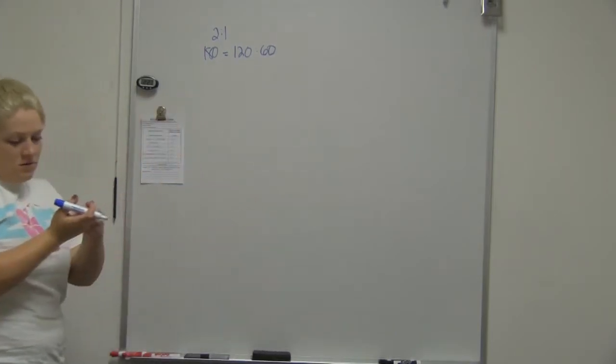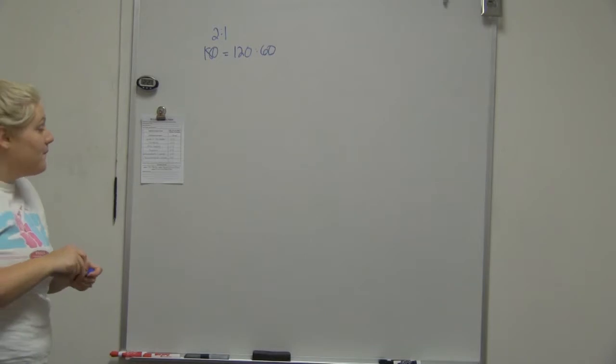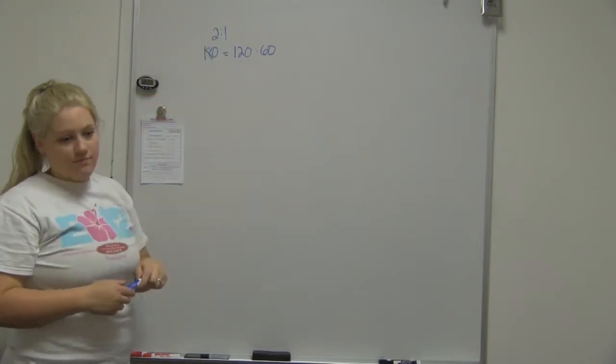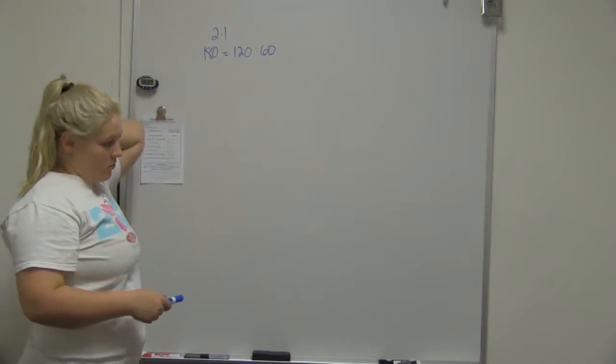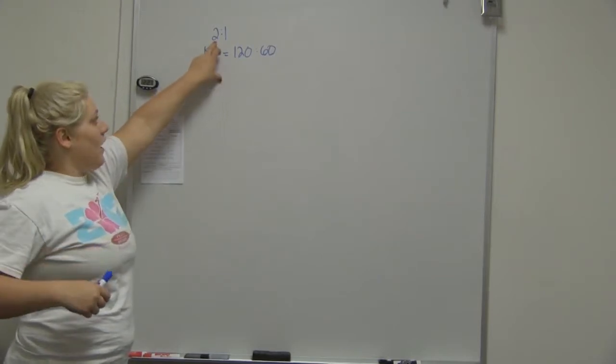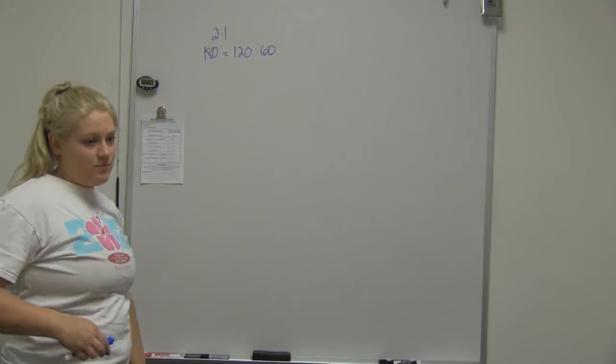So the shoulders are always the one and the humerus is the bigger number? Yeah. So shoulder joint, shoulder girdle. Which one's the shoulder girdle? Shoulder girdle is the one. So for every two degrees of shoulder abduction, you're going to see one degree of upward rotation.